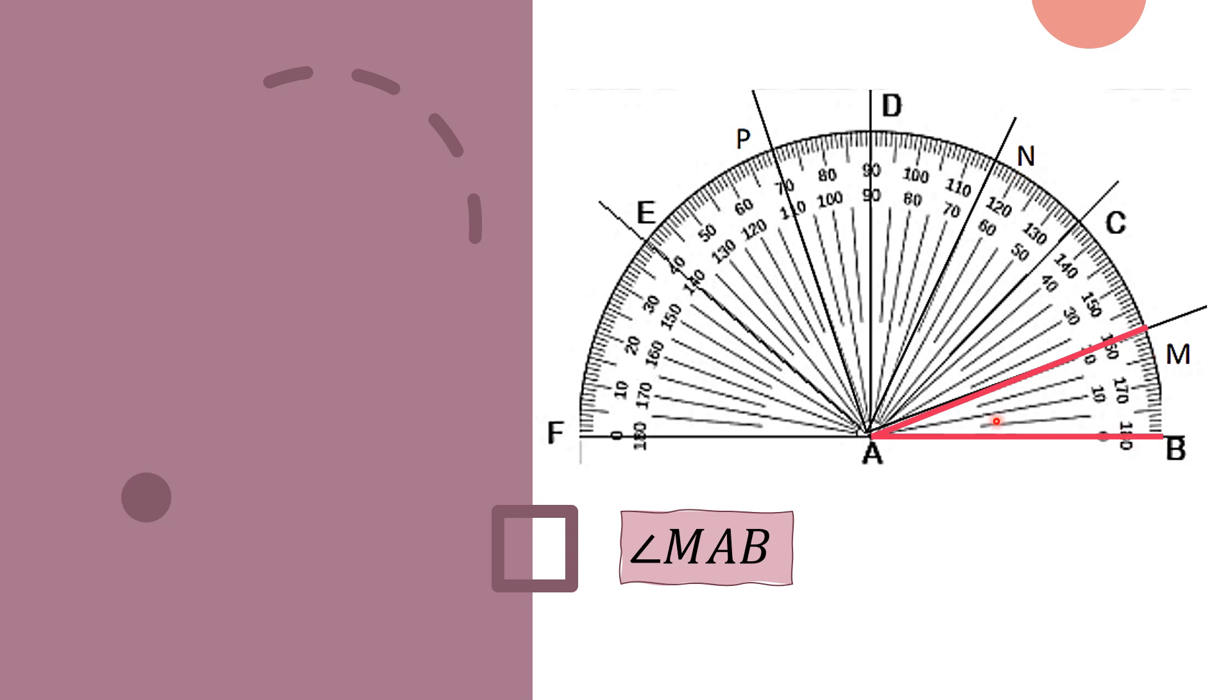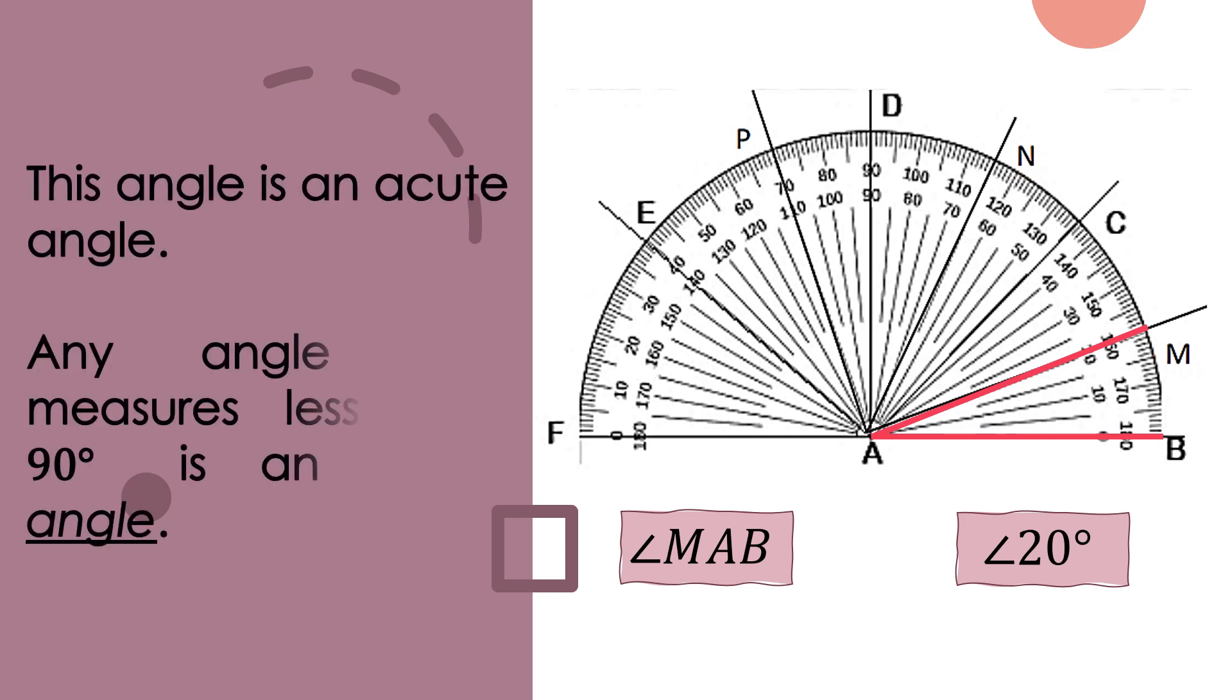Since the measure of angle MAB lies on the inner scale which is 20, therefore angle MAB has the measure of 20 degrees. This angle is an acute angle. Any angle that measures less than 90 degrees is an acute angle.